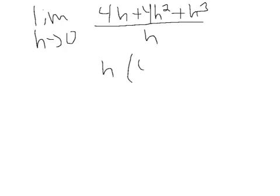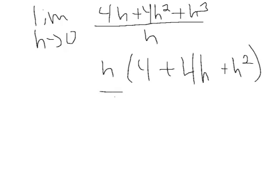So h times 4 plus 4h, whoops, not squared, plus h squared in the end, all over h. I can cancel out that h.